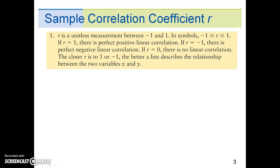There are four important properties of the correlation coefficient. First, R is a unitless measurement between negative 1 and 1. In symbols, negative 1 less than or equal to R less than or equal to 1.